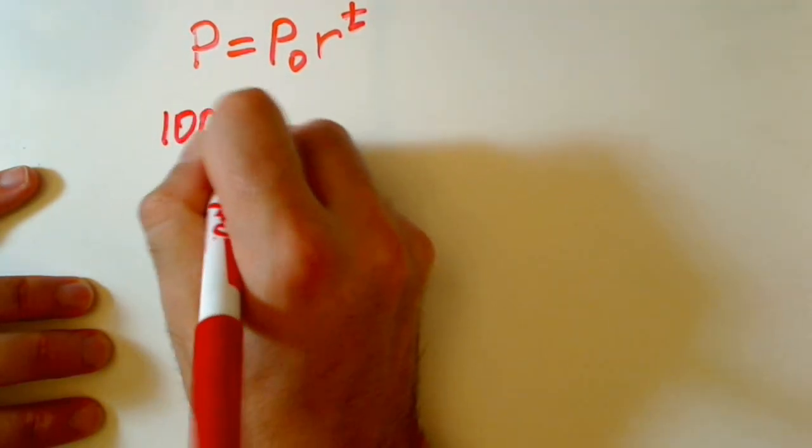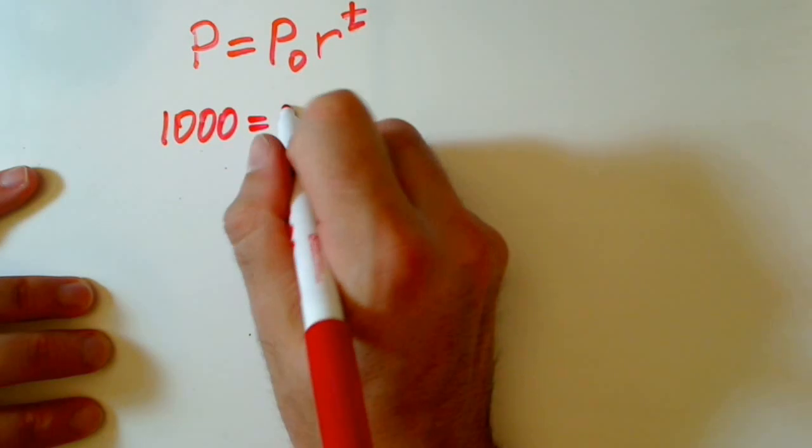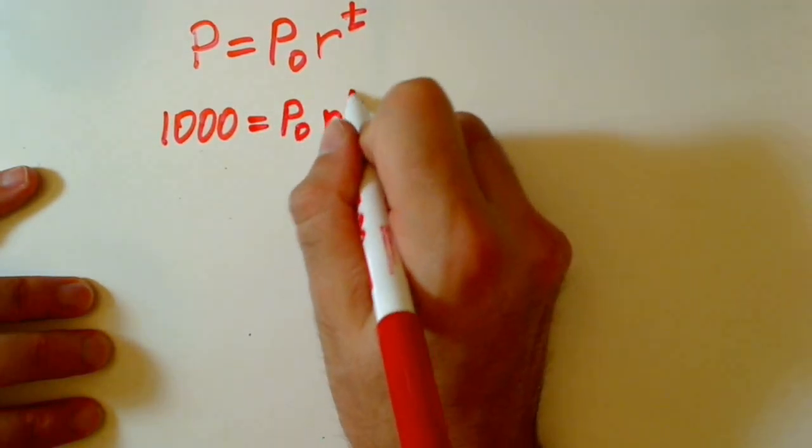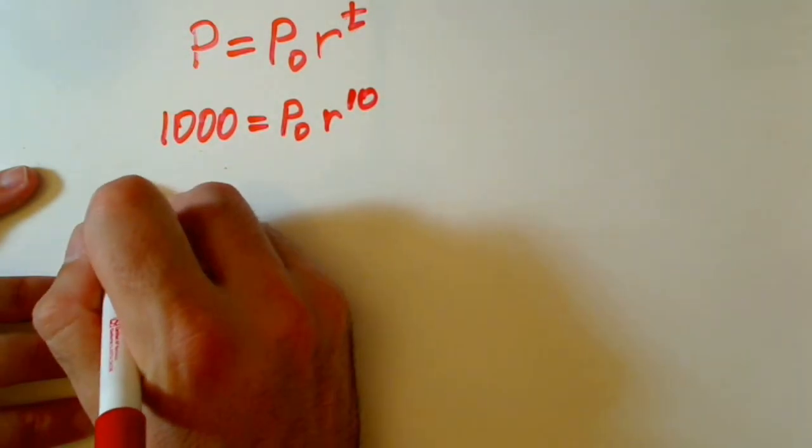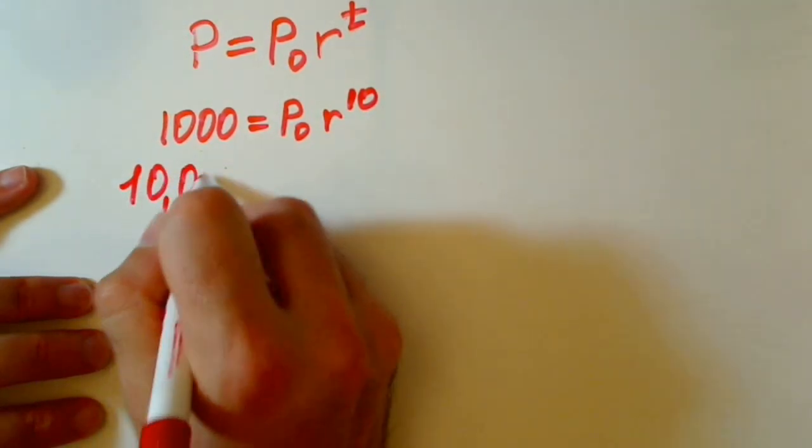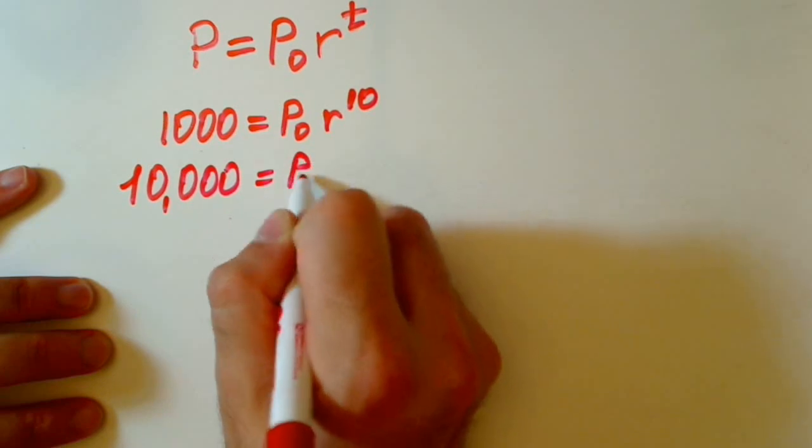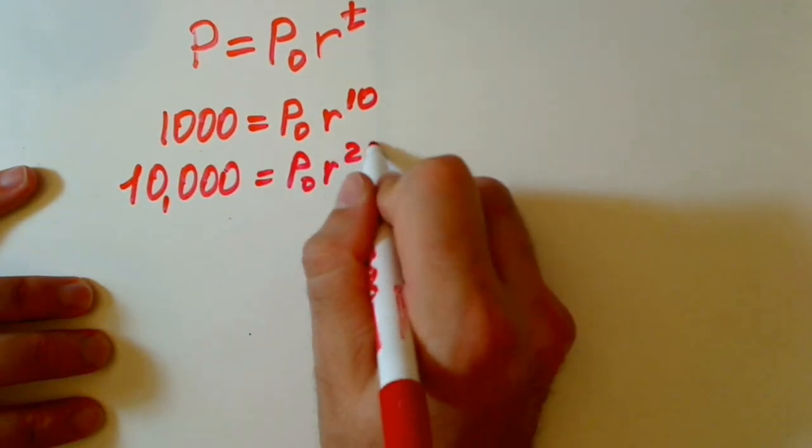We have population of 1000 equals initial population rate to the 10 minutes. And also we know that after 25 minutes, the population was 10,000. 10,000 equals initial population rate to the 25th.